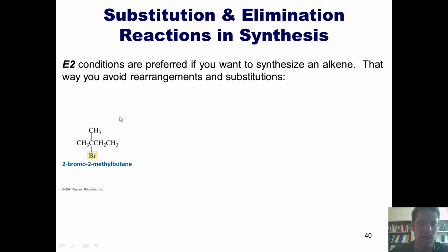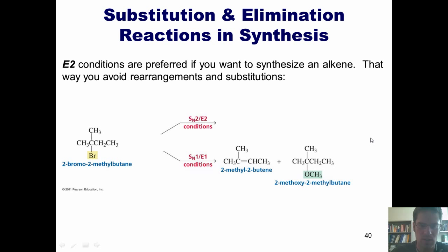If, for example, I have this starting material, 2-bromo-2-methylbutane, and I react it under SN1/E1 conditions, I will, of course, get the major elimination product, but I can also see substitution occurring via an SN1 mechanism. If, in contrast, I treat them under SN2/E2 conditions, because this is a leaving group stuck to a tertiary carbon, no SN2 products will ensue.